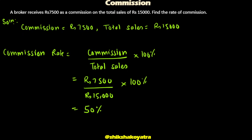The formula for commission rate is: commission divided by total sales, multiplied by 100%. So, 7,500 divided by 15,000 multiplied by 100% gives us 50%. So the commission rate is 50%.